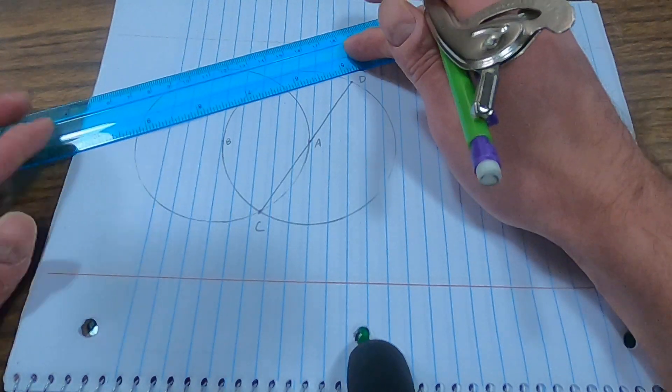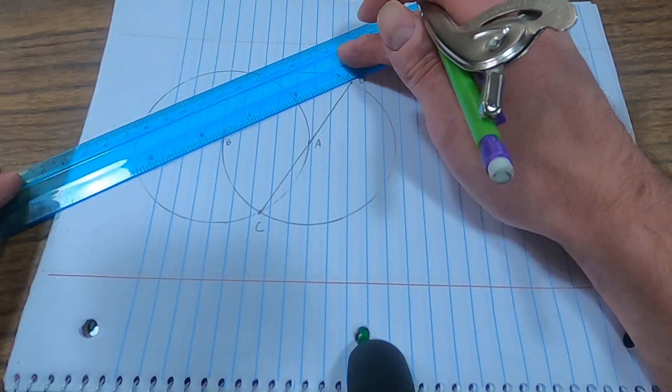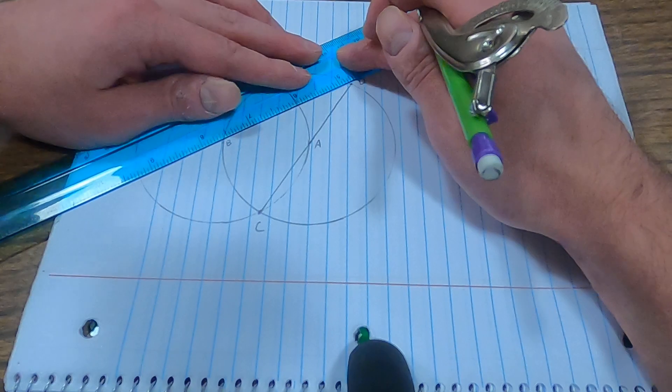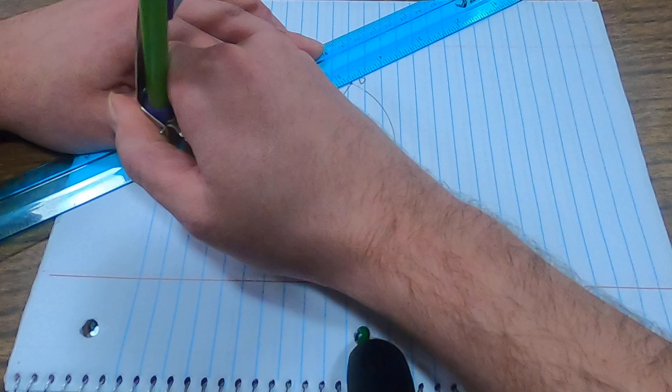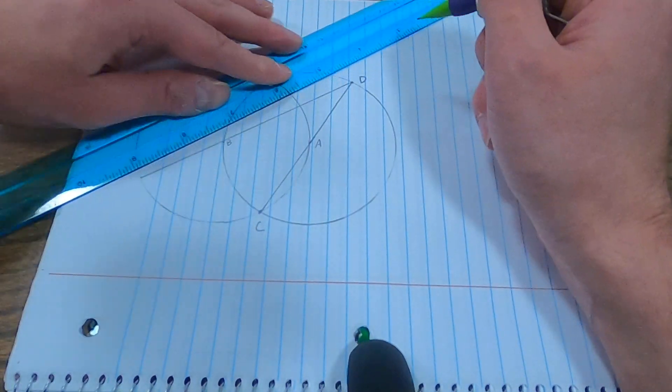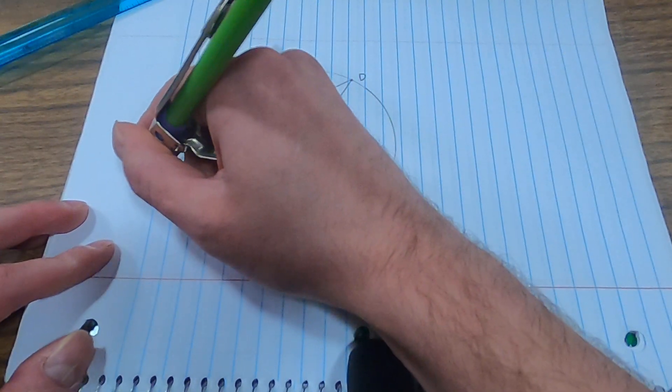Then I'm going to draw a line through D, B. And I'm going to call this intersection point E.